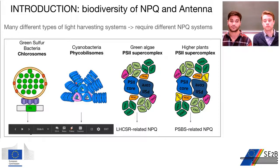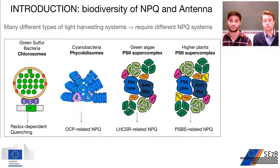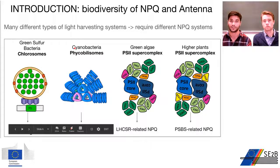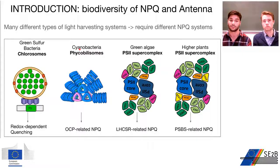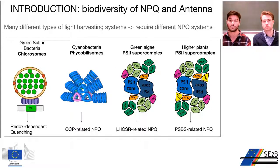Many different kinds of antenna complexes have been developed by different organisms during evolution. In green sulfur bacteria the light is harvested by chlorosomes and then transferred through the FMO protein to the photosystem. In cyanobacteria the light is harvested by phycobilisomes, and plants and green algae have light harvesting complexes in the thylakoid membranes. Therefore, along with different antenna complexes, these organisms have also developed different kinds of photoprotective mechanisms.